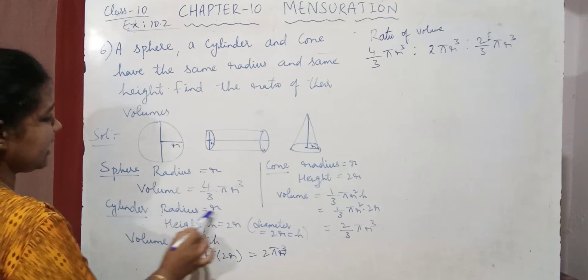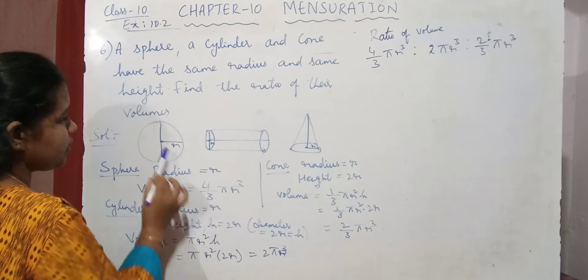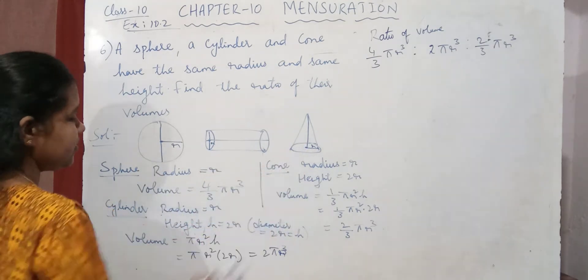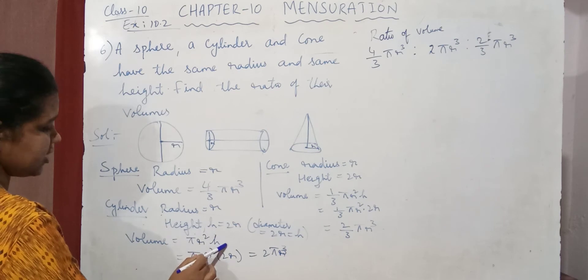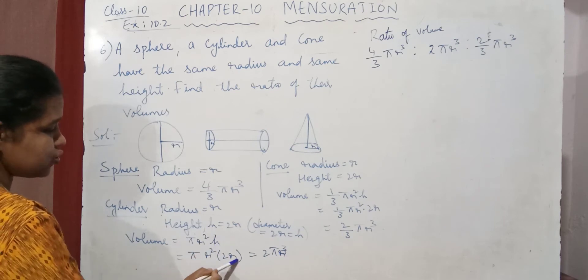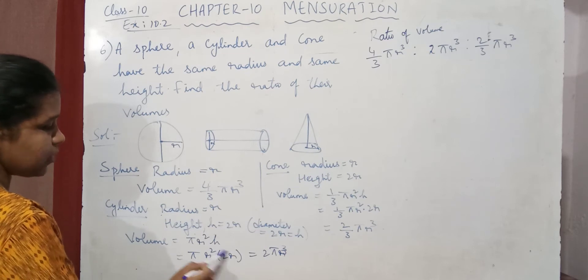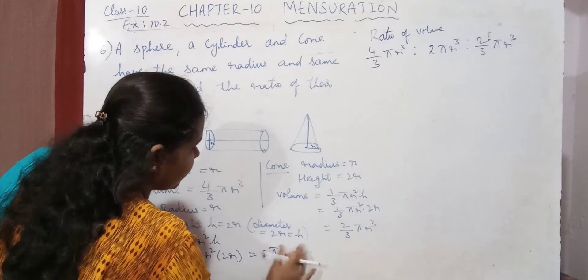Similarly, for the cylinder, if I am taking radius r, then height is 2r. Why am I getting 2r? Because the height is same for all the 3. So what is the formula of volume of cylinder pi r square h? So in place of h, I am writing 2r. So pi r square into 2r. So you will get 2 pi r cube. R square into r is r cube. So I can write it as 2 pi r cube.